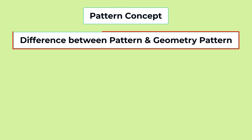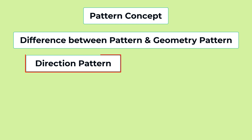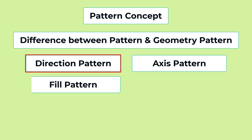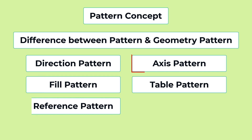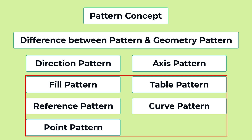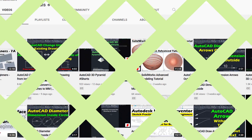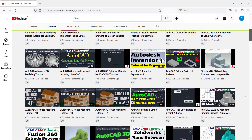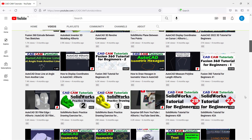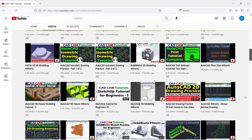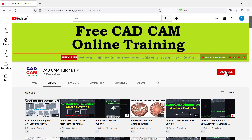In the previous part of this tutorial we learned the difference between pattern and geometry patterns, and we also learned to create rectangular (direction) and circular (axis) patterns. Now in this tutorial we will learn to create the remaining patterns. We release new videos every alternate Monday, Wednesday, and Saturday. To receive notifications please subscribe to this channel and press the bell icon. Please also like and share this video.